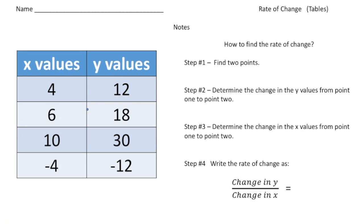Step one: find two points. In this x-y table we have four points: (4, 12), (6, 18), (10, 30), and (−4, 12). I'm going to pick just two — you can choose any two. I'll use the first two.